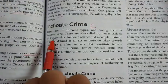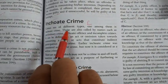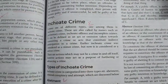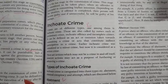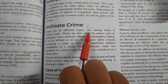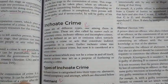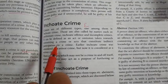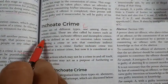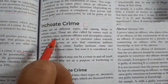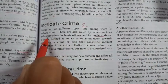Crimes are of different types. One among them is inchoate crime. These are also called by names such as preliminary crime, inchoate offence, and incomplete crimes.